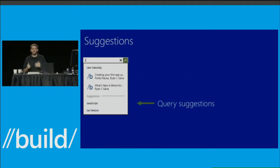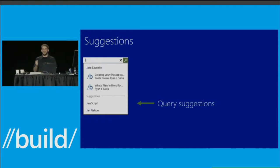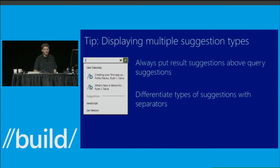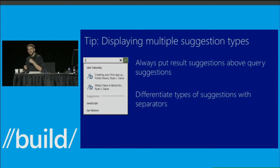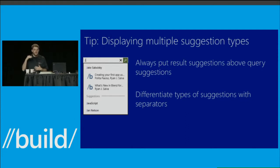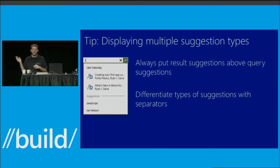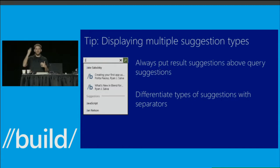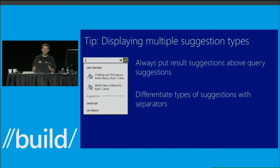Query suggestions reduce typing — if you can type three characters and get the full query string you're trying to enter, that's a big win. Always put result suggestions above query suggestions, similar to how we put quick actions at the very top of the search charm, because they save the most time and are the most specific. If what you're looking for is at the top — say MSFT for a stock quote — you just press down once, hit enter, and you've got it. Also put separators between different types of suggestions to help users parse the list faster.